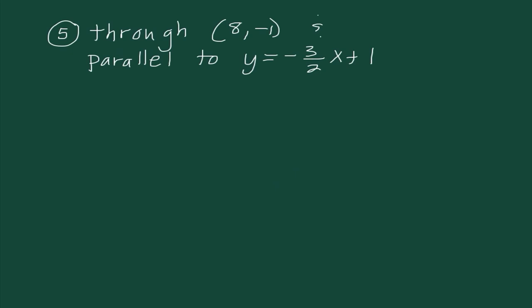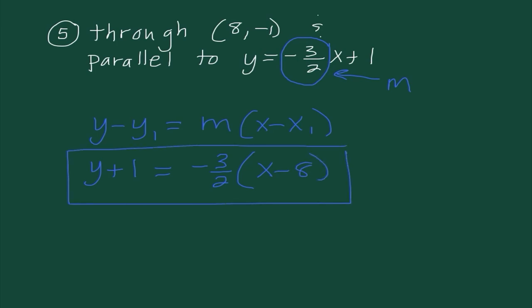We need to find the equation of the line through (8, -1) parallel to Y equals negative three halves X plus 1. Since this is in slope-intercept form, the slope is negative three halves. Parallel lines have the same slope, so using point-slope form: Y minus negative 1, or Y plus 1, equals negative three halves times the quantity X minus 8. That's all there is to it.